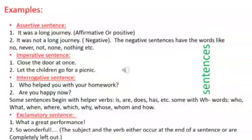Examples. Assertive sentence can be affirmative or positive or negative. The negative sentences have words like no, never, not, none, nothing, etc. For example, it was a long journey, affirmative or positive. It was not a long journey, negative sentence.